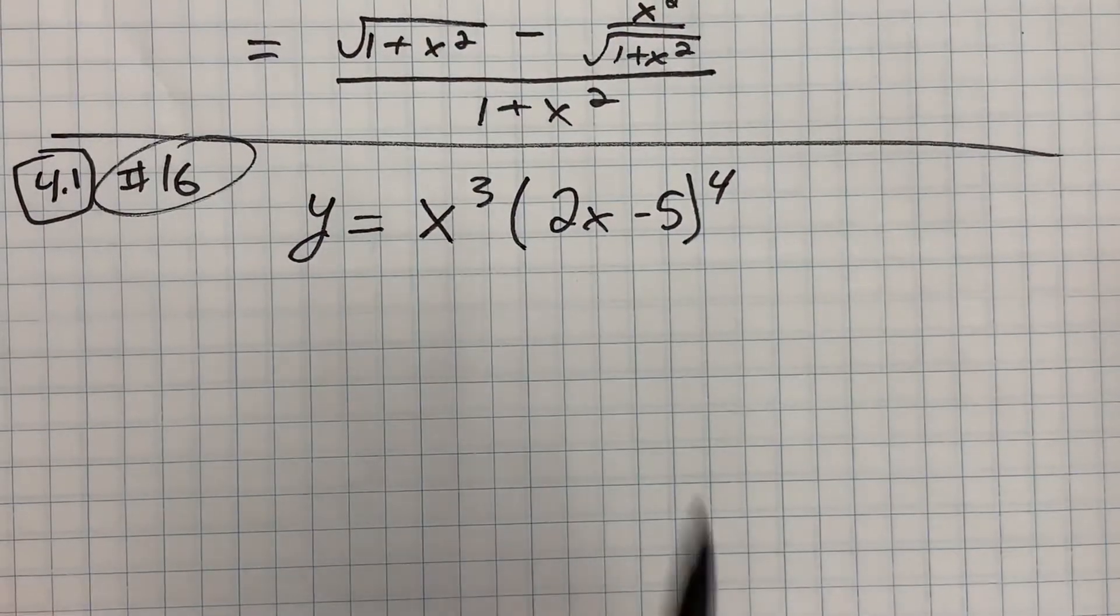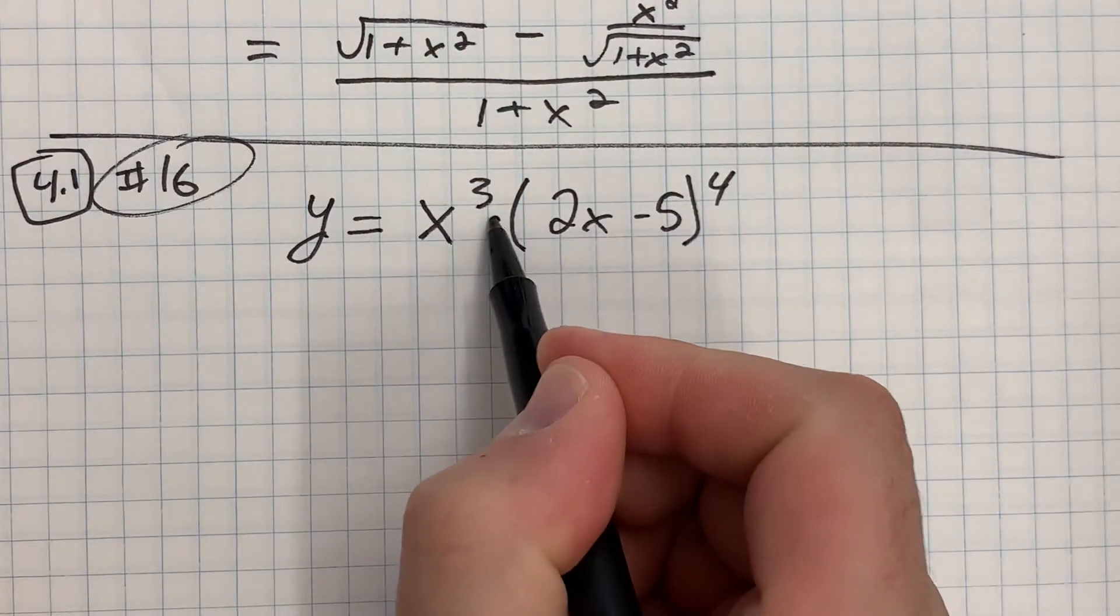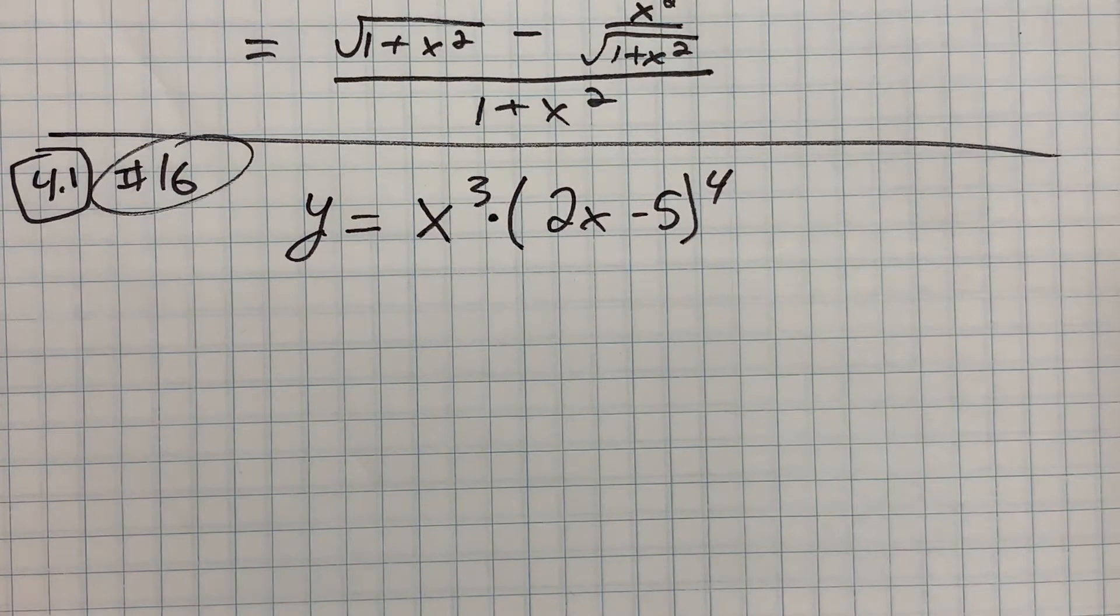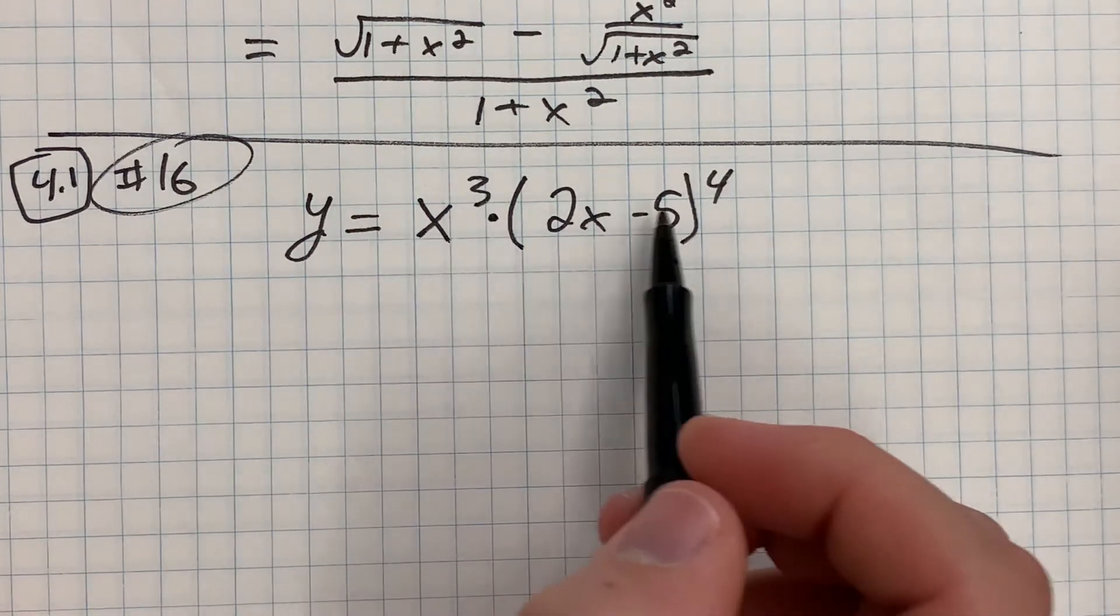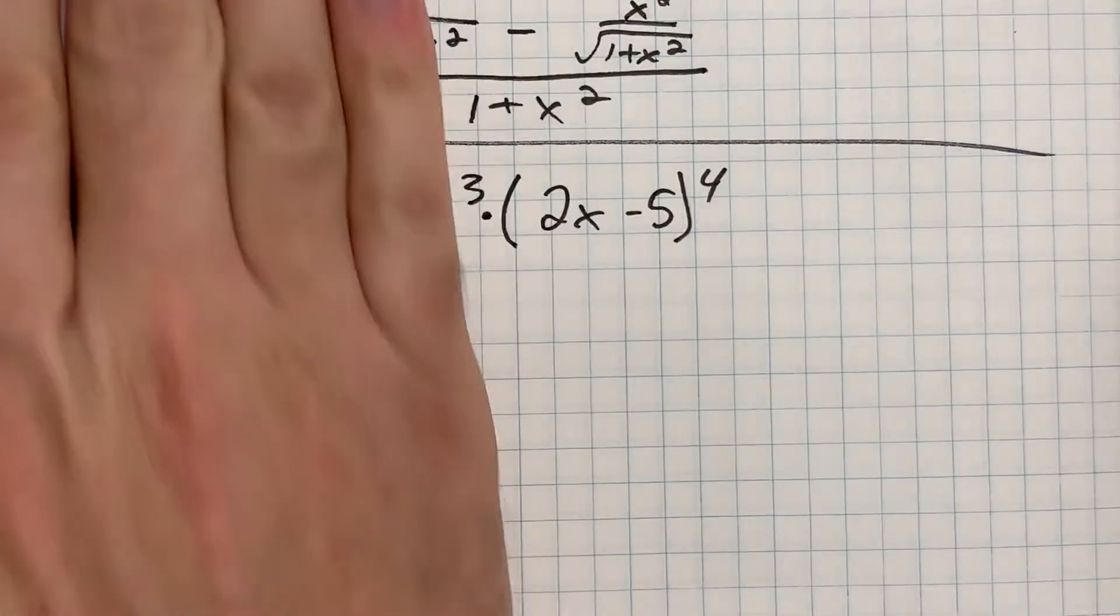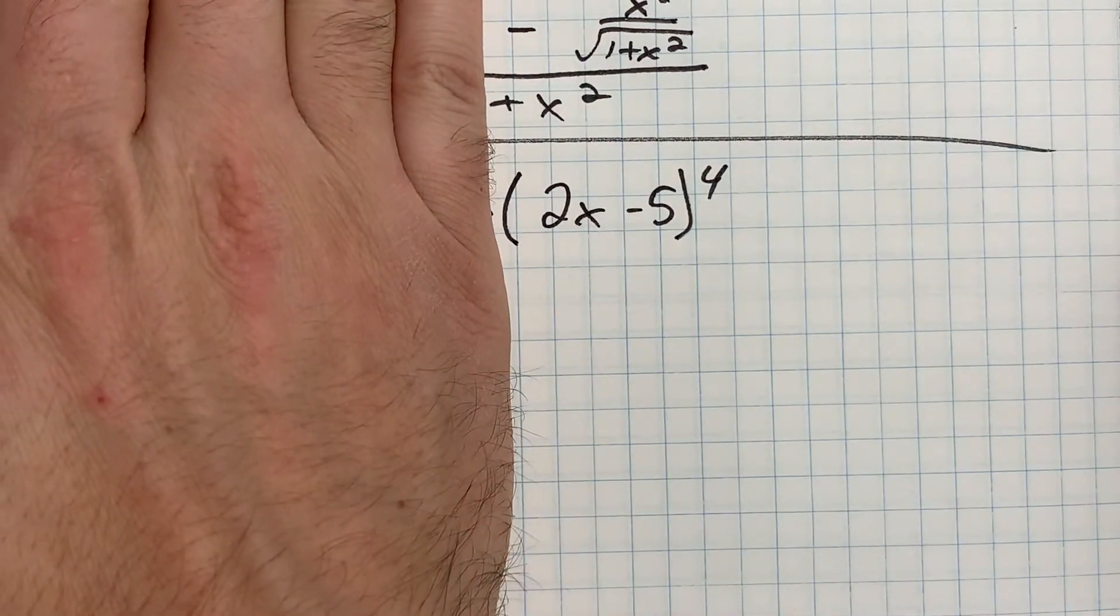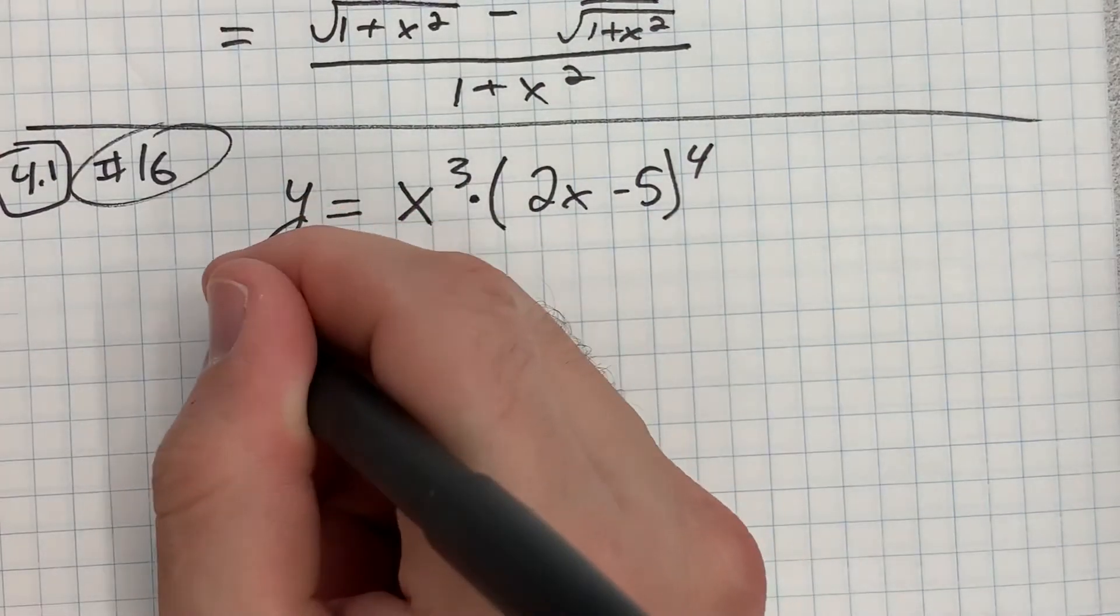For problem 16, you've got to notice this is a product rule. We'll apply the product rule, but in the context of these two functions being multiplied, we also have to take the derivative of that thing, which is itself a chain rule question. So let's do that.